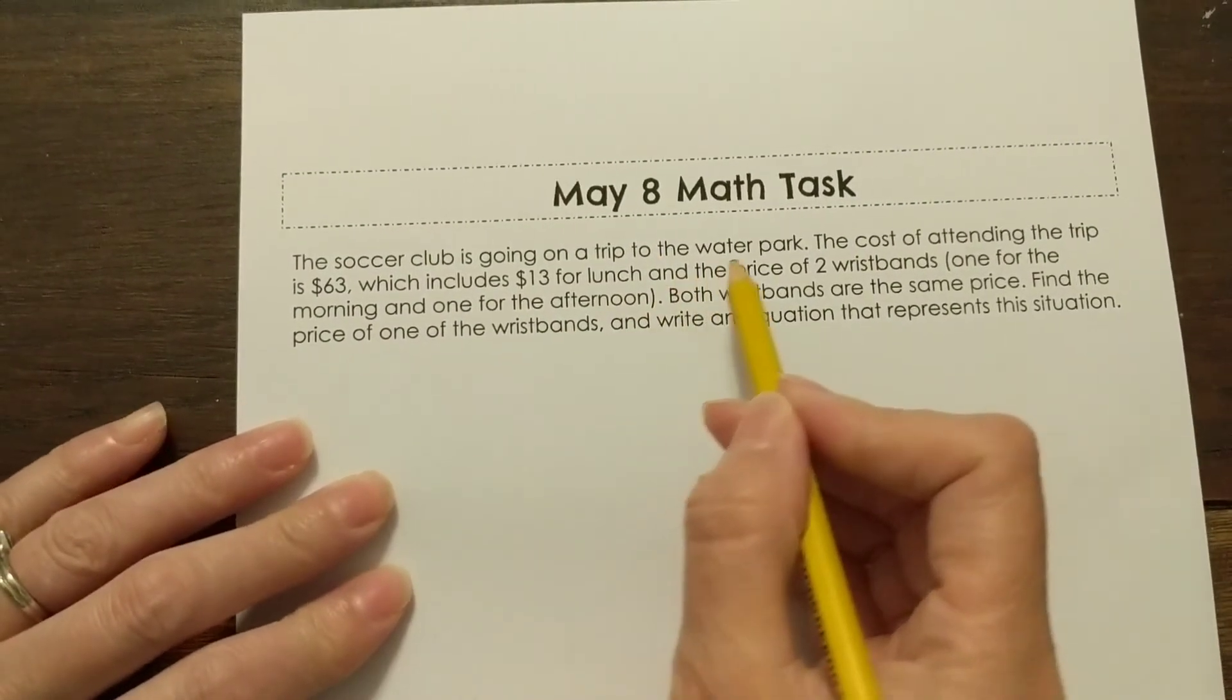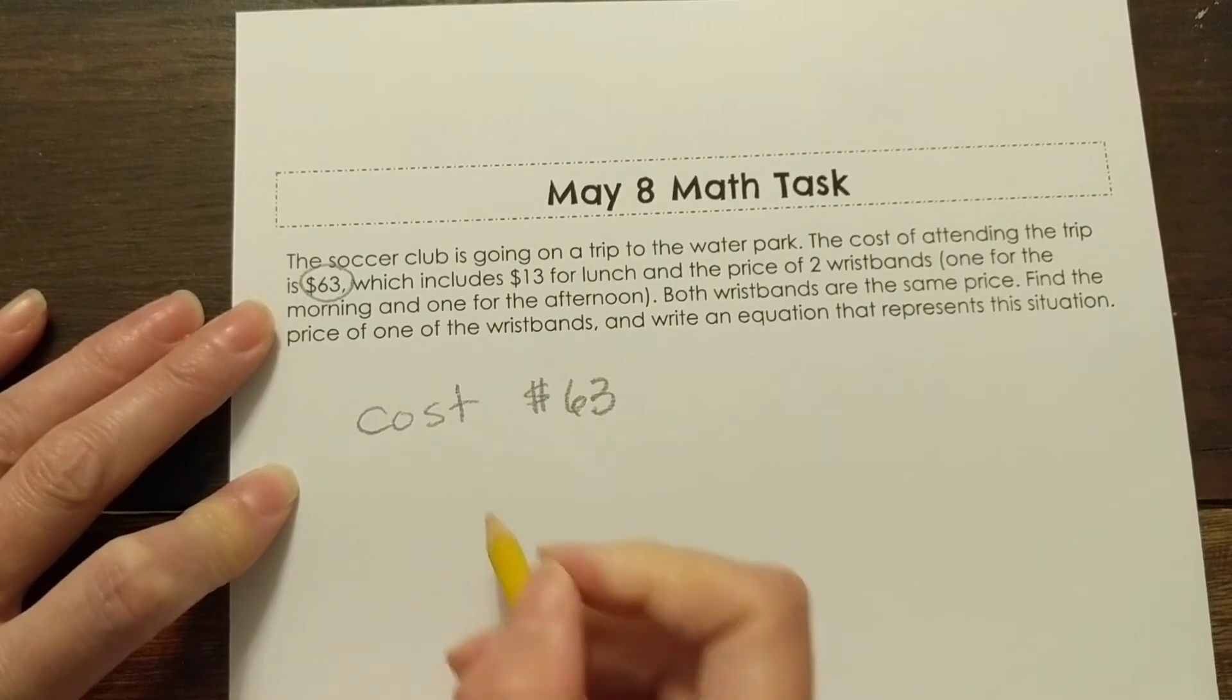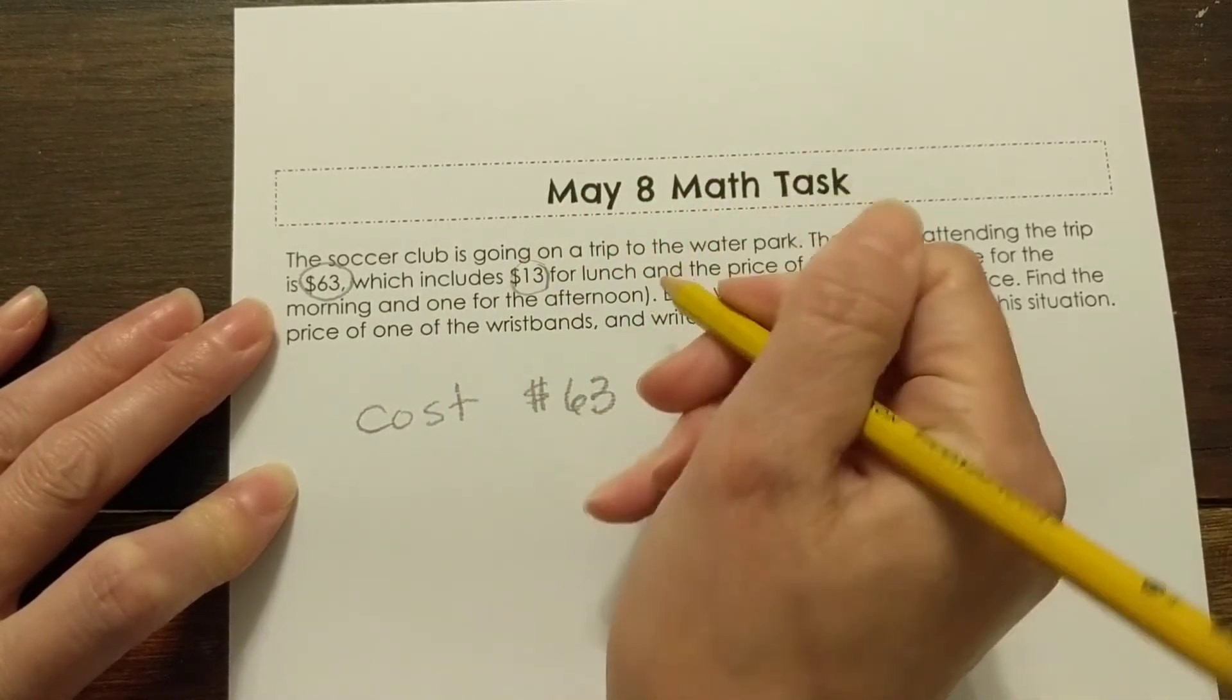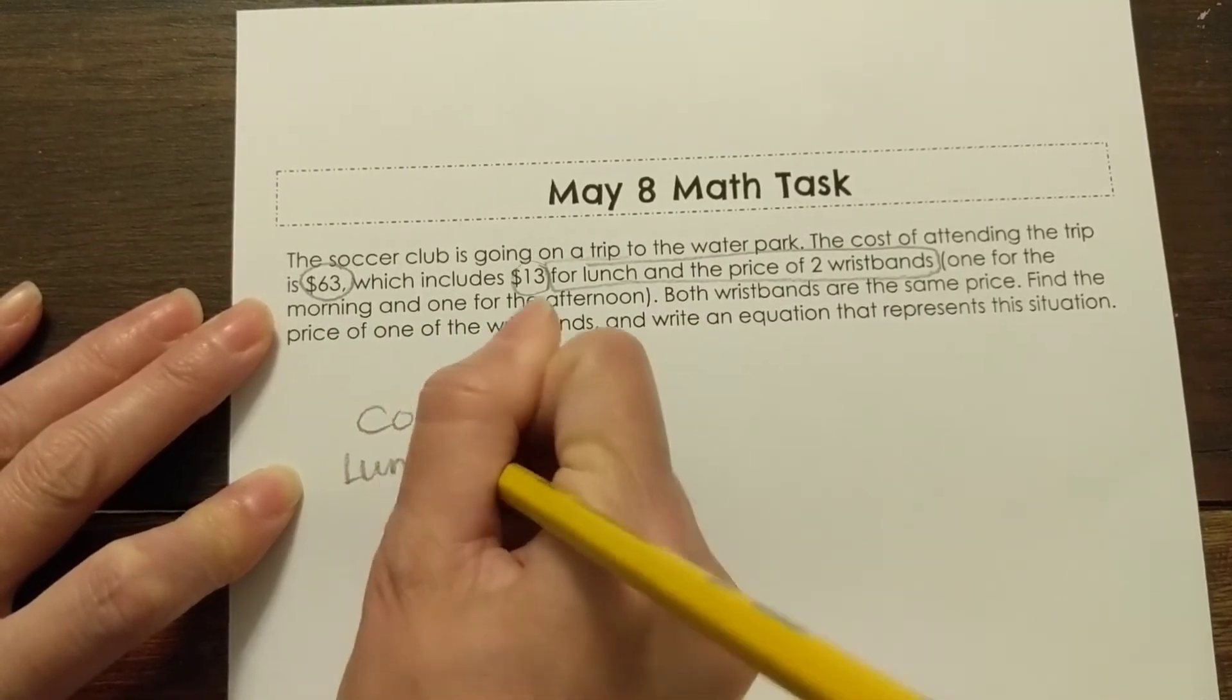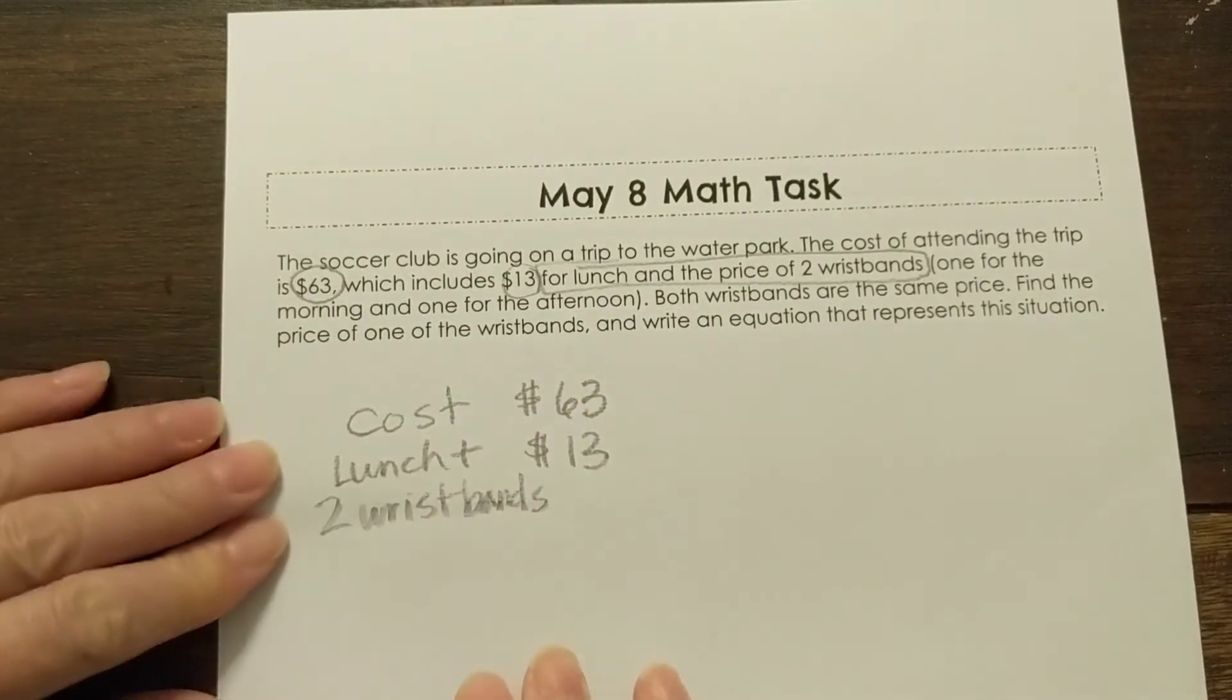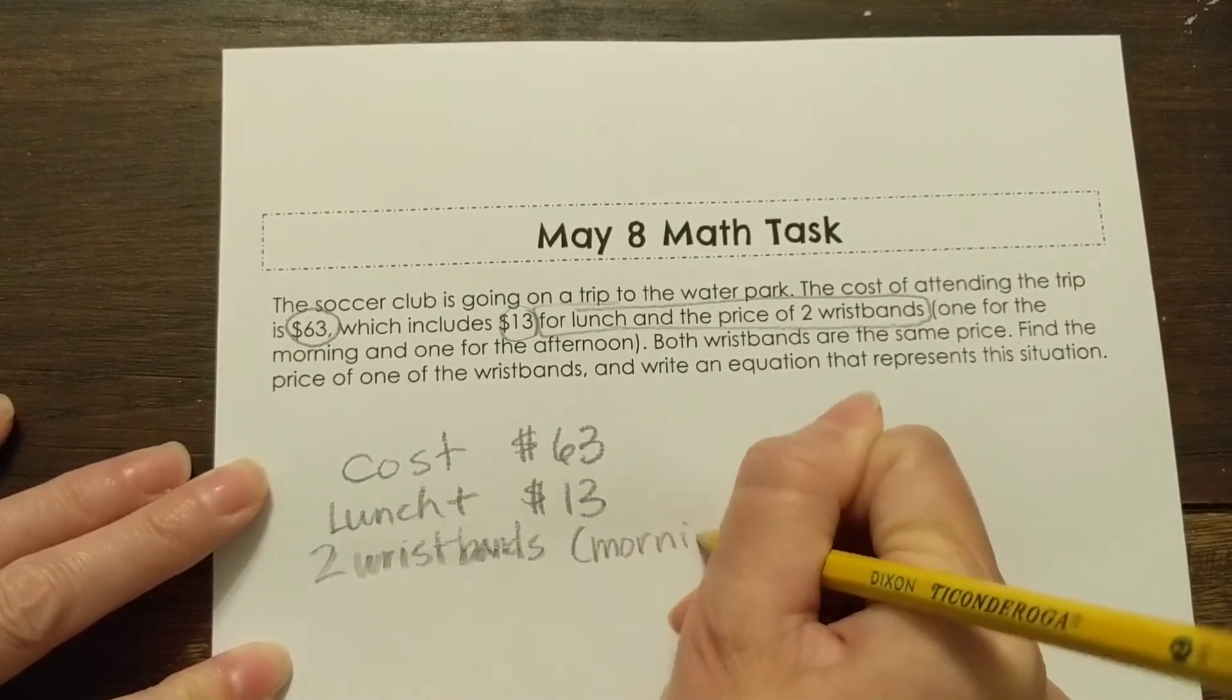All right. The soccer club. Here's our math task. The soccer club is going on a trip to the water park. The cost of attending the trip is $63. So this is one thing I know. The cost is $63. I always want to write down what I know. If I can, I start with a picture because that's really important. Writing what I know and then starting with a picture. Which includes $13 for lunch and the price of two wristbands. That's a pretty good deal. So $13 is lunch plus two wristbands.